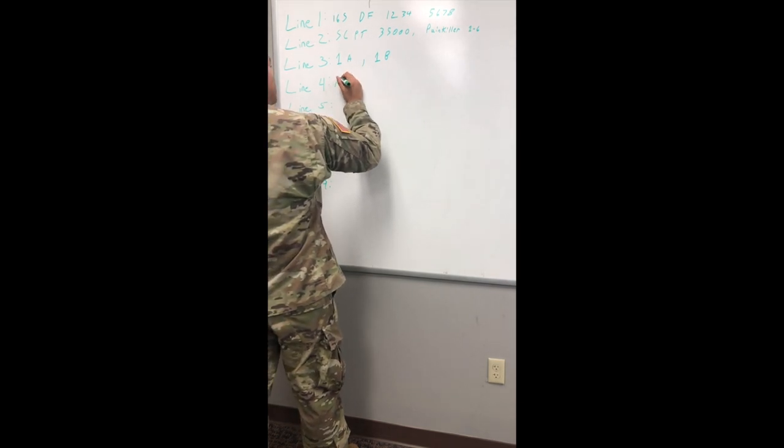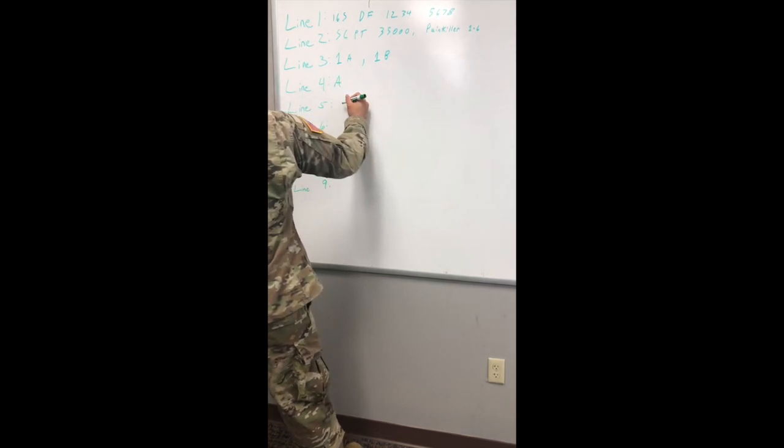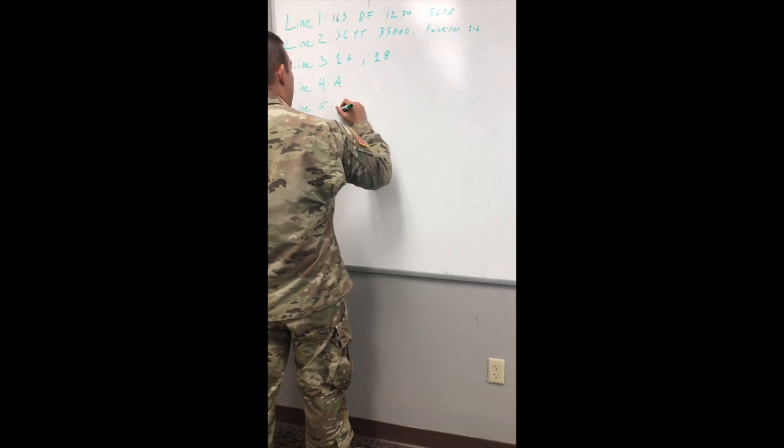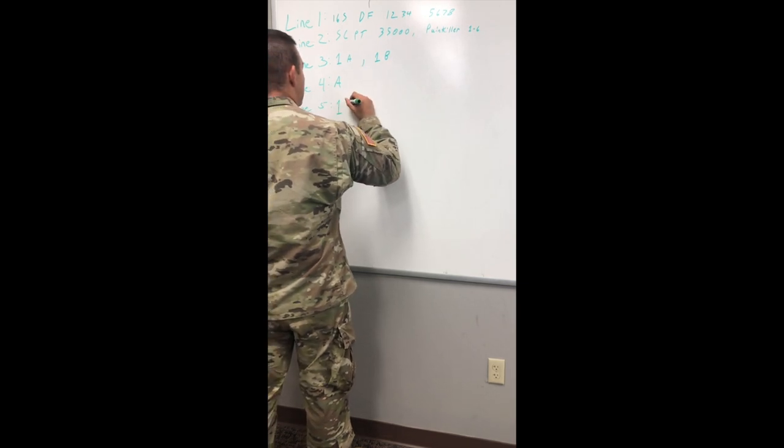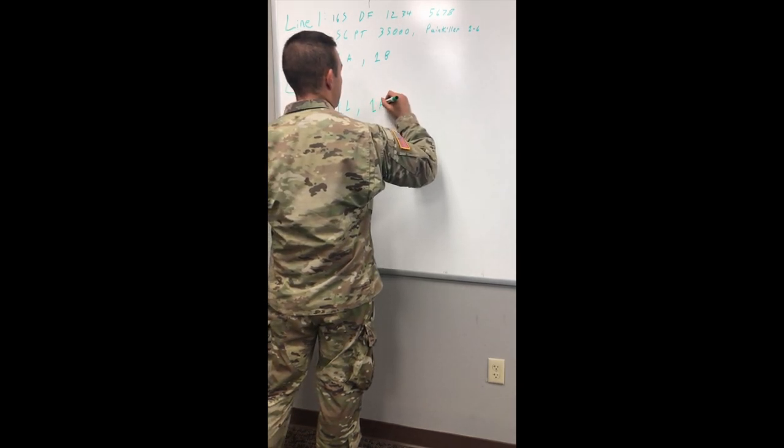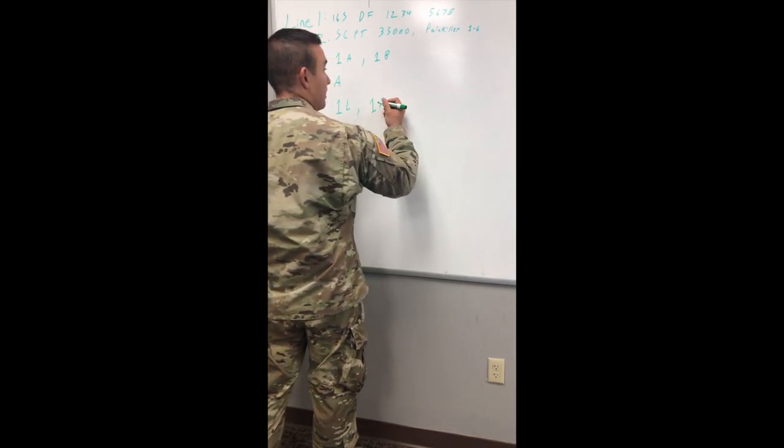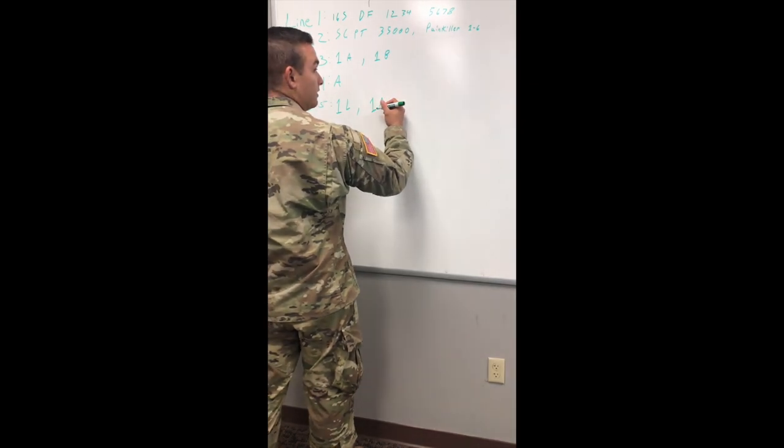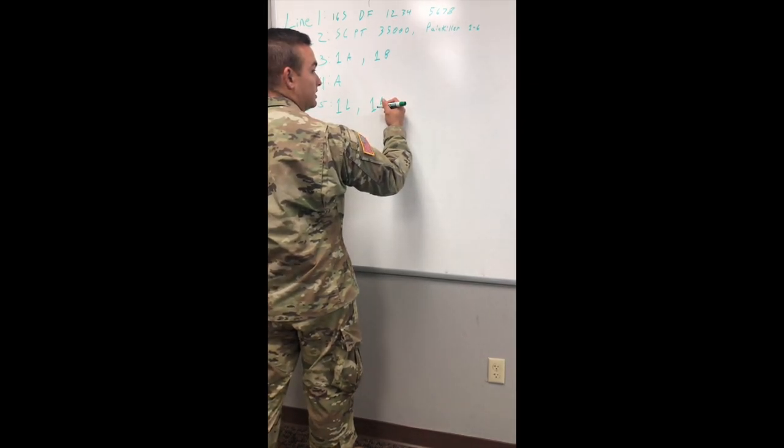Line four is alpha because we need no special equipment. Line five is one Lima break one alpha because we have one casualty who can't walk because he has no legs and one alpha for the casualty who can walk because he has a gunshot wound to his arm.